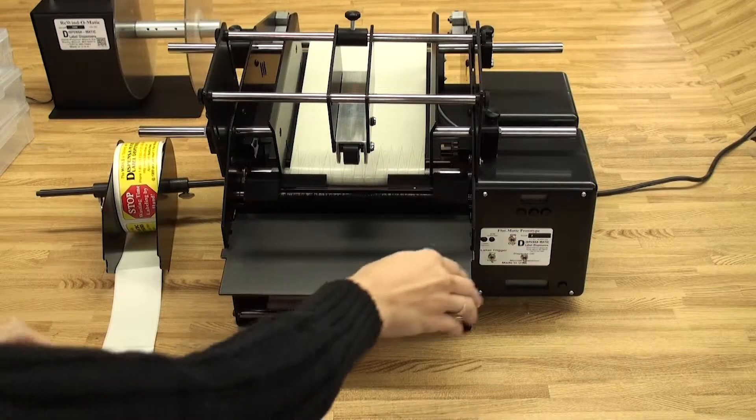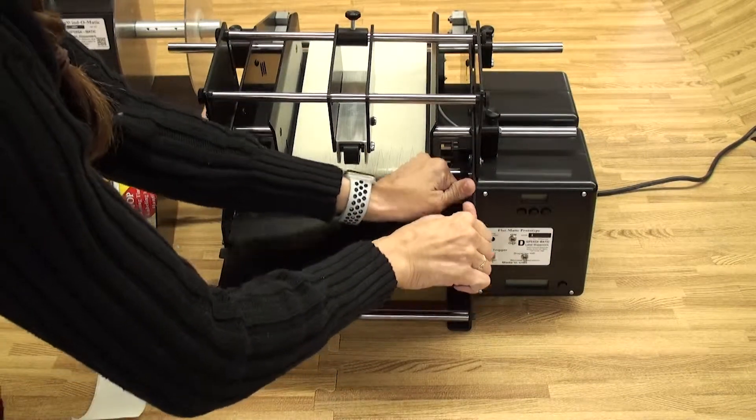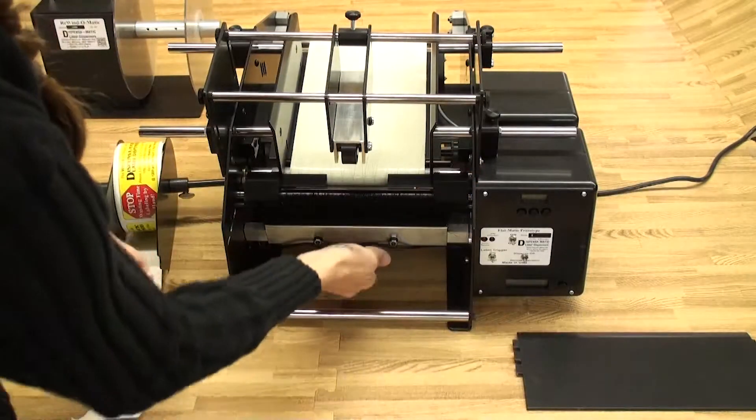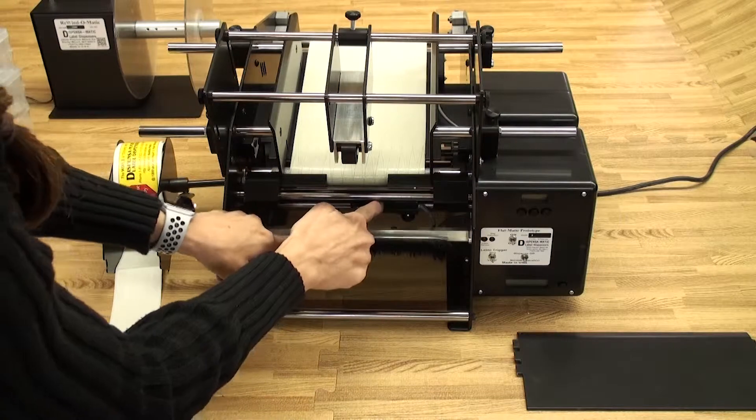Now we are going to remove the front plate. Slide it to the left and then lift up and to the right. Then we are going to bend the brush down so that we can see the label sensor.